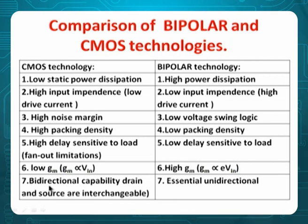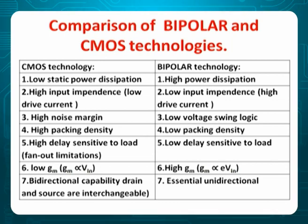Seventh: CMOS has bidirectional capability — drain and source are interchangeable. Because there is no junction involved, current can flow in both directions, whereas BJT is essentially unidirectional. This is the basic comparison between CMOS and bipolar technologies. In general, as a switch CMOS is good, and as an amplifier BJT is good.